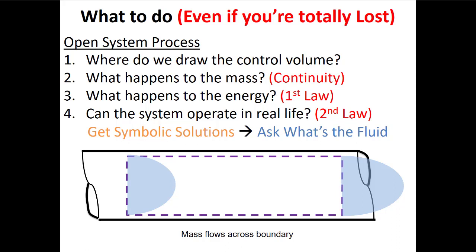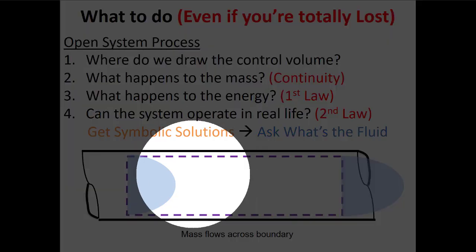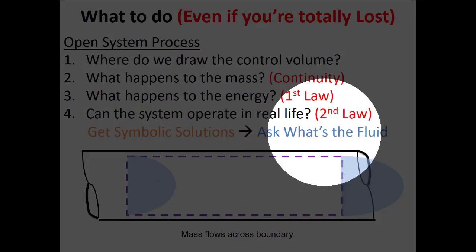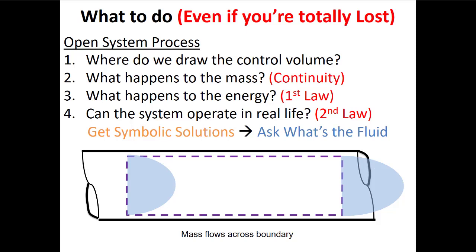These three steps will get us to a symbolic solution for what we're looking for — whether that's trying to find the power generated by a turbine, the heat transferred in a heat exchanger, or whether a process is possible in the universe. But we'll always get to a point where we need to fix the states, finding things like specific enthalpy, specific entropy, and maybe specific volume.